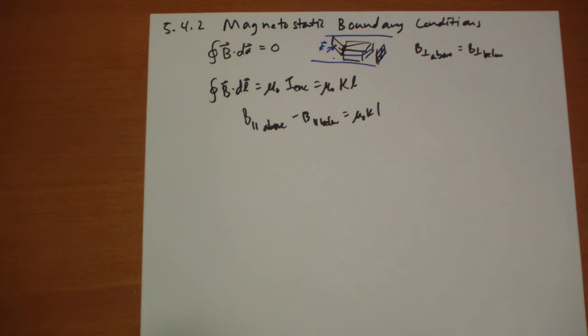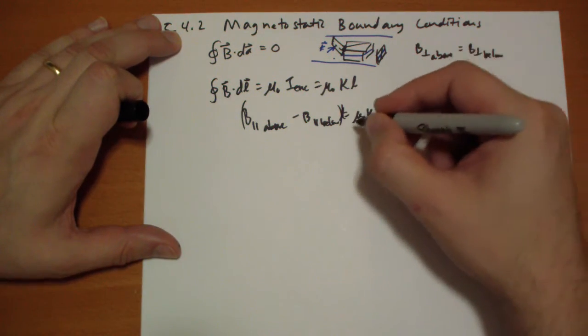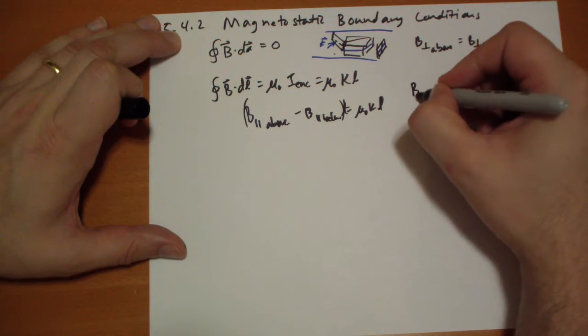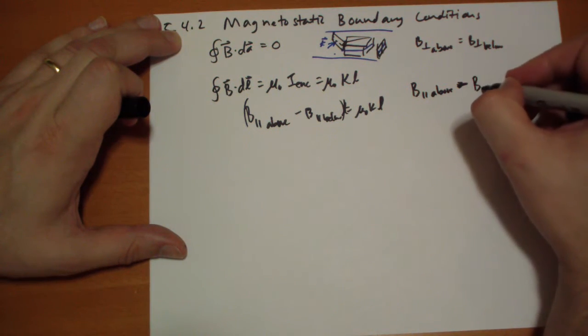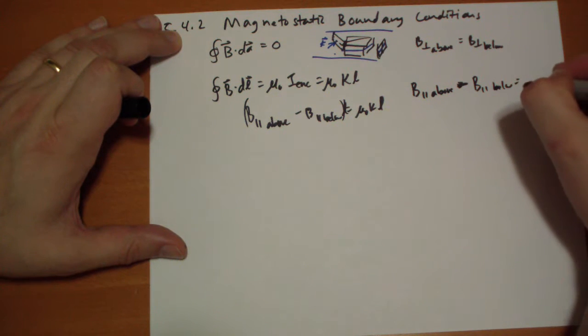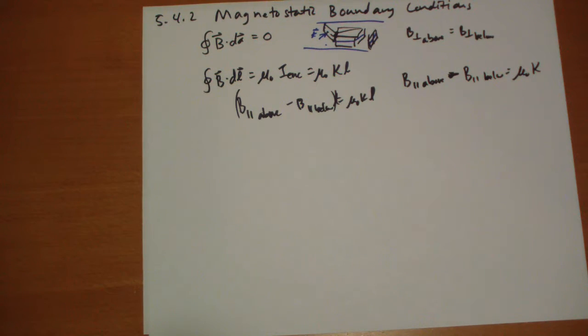Oh, we have the factor of L, so we have to... there's an L there. L, L. Cancel the factor. So we get the rule that B parallel above minus B parallel below is equal to the surface current perpendicular to that. Next, the component of B which is parallel to the surface but perpendicular to the current is discontinuous in the amount of mu-naught K.